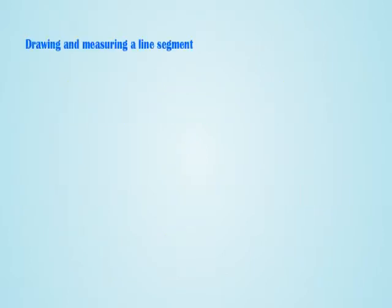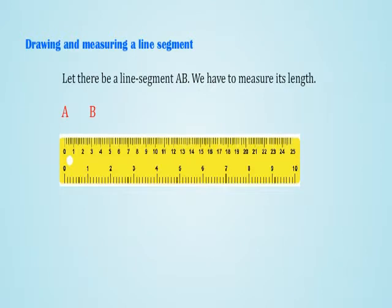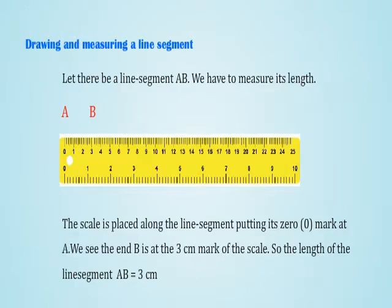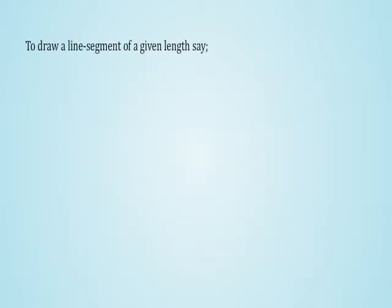Drawing and measuring a line segment. Let there be a line segment AB. We have to measure its length. The scale is placed along the line segment, putting its zero mark at A. We see the end B is at the 3 cm mark of the scale. So the length of the line segment AB is equal to 3 cm.